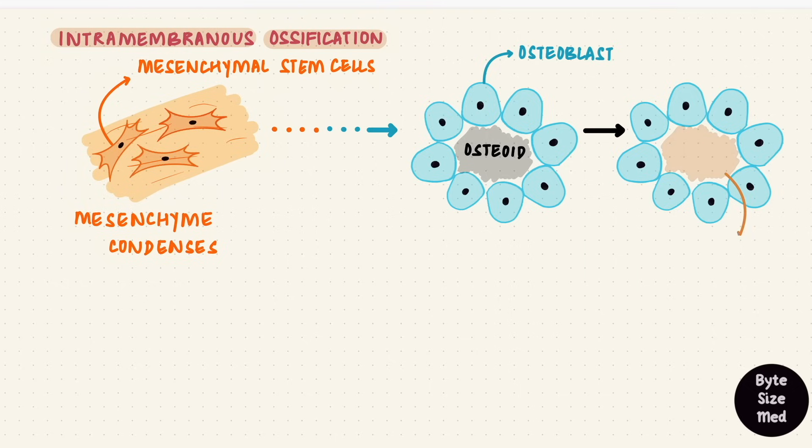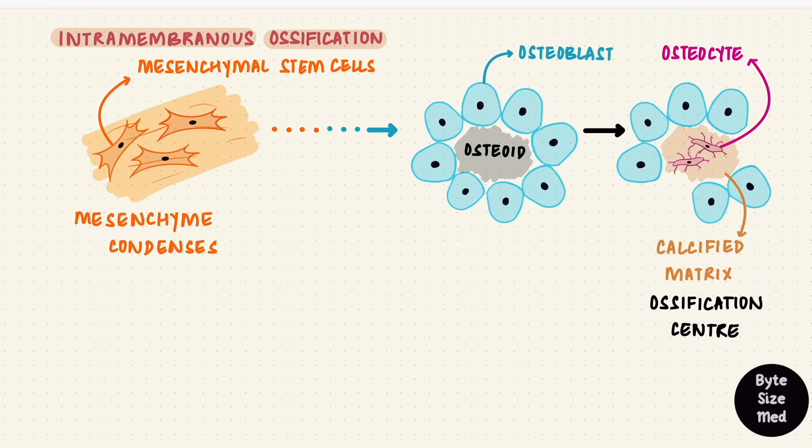As the osteoblasts form this matrix, some get trapped forming osteocytes in those lacunae. They have cytoplasmic processes that sit in caneliculi. This is an ossification center, and multiple ossification centers form and fuse.